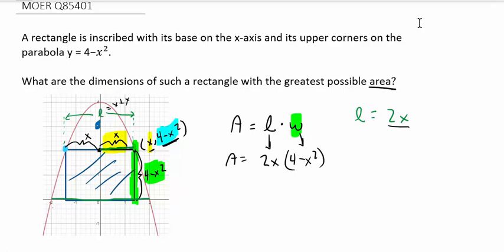The dimensions of the rectangle were such that the length was actually 2x, and the width was 4 minus x squared. So when it says what are the dimensions of the rectangle, we need to find the values of 2x and 4 minus x squared.